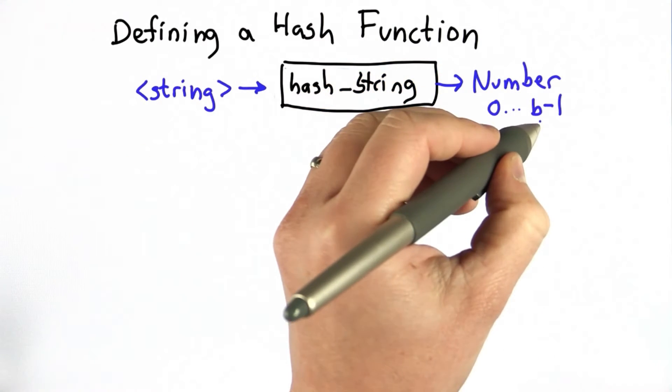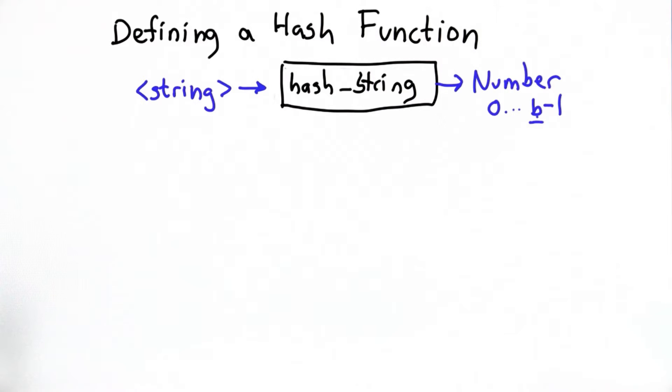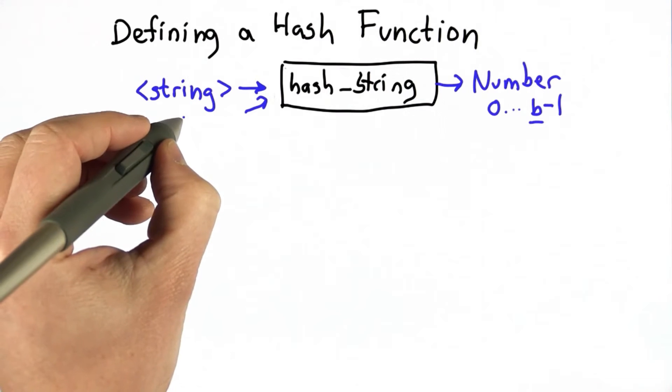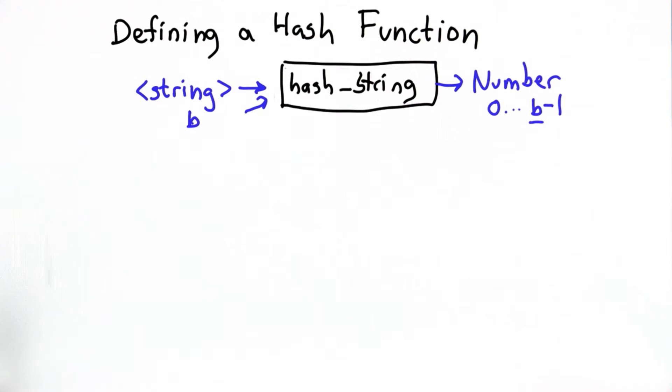So we also need another input to our hash string, which is going to be the size of the hash table. So that'll be the second input, the number of buckets.